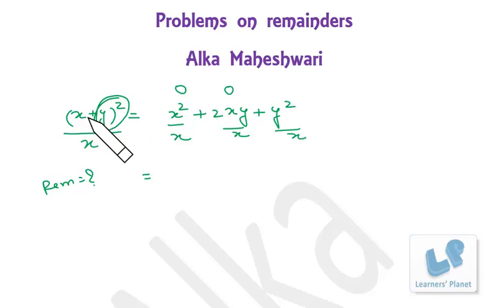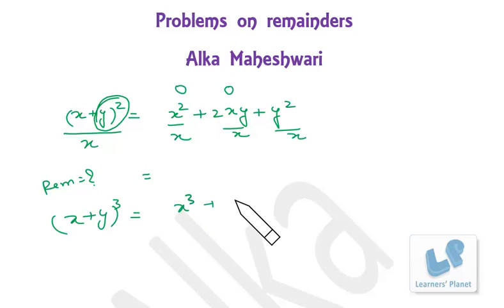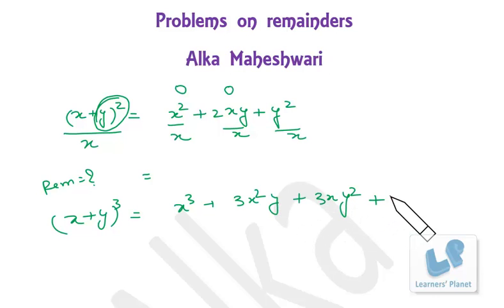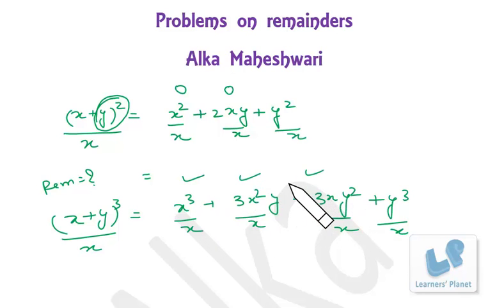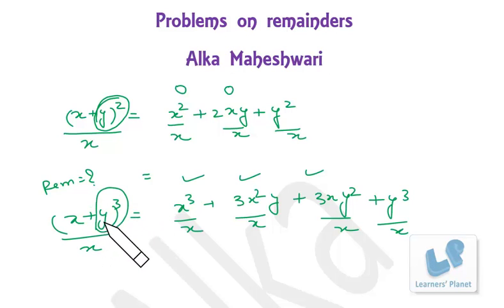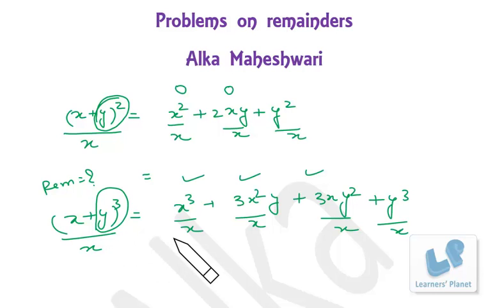Similarly we can go for (x+y)³, which expands to x³ + 3x²y + 3xy² + y³. If this entire expression is divided by x and we find the remainder, the first three terms are multiples of x. So we only get the remainder from the last term. Therefore, (x+y)³ divided by x gives remainder y³. That's pretty simple.